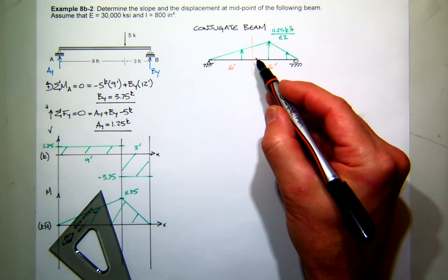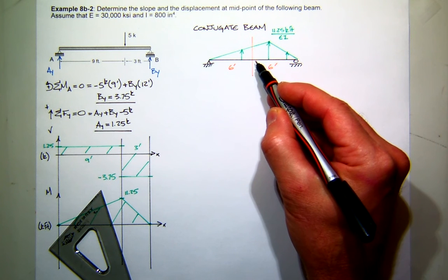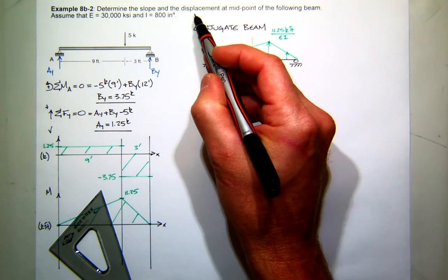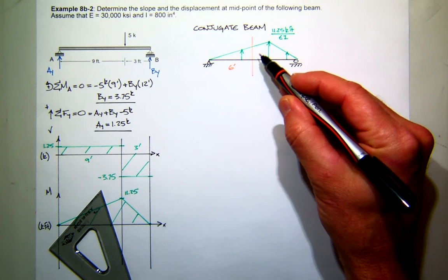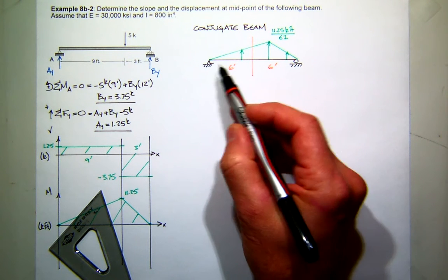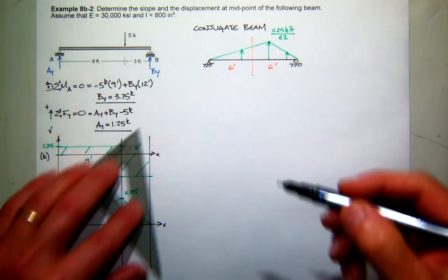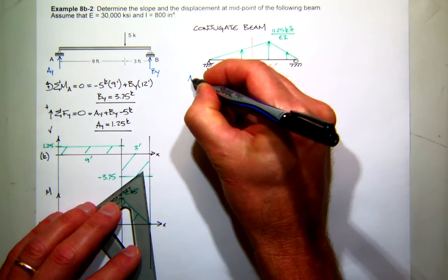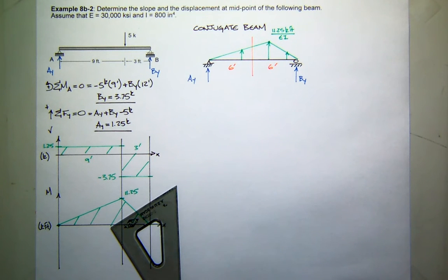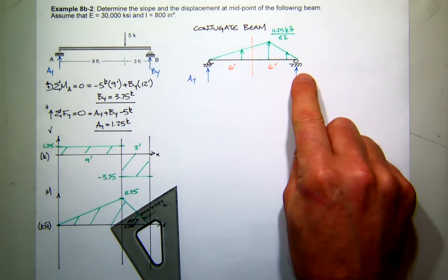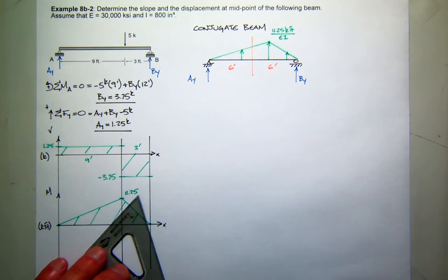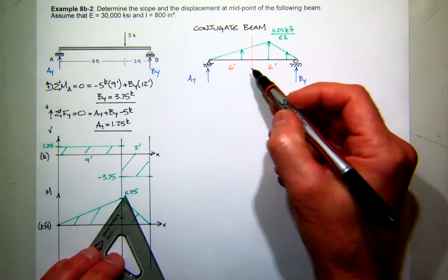Now remember, in the conjugate beam, when I find shear in the conjugate beam, what is that in the real beam? Slope. When I find moment in the conjugate beam, what is that in the real beam? Deflection. So I just need to find the internal shear force and bending moment at this cut. Do you want to work the left side or the right side? The left side has a clear advantage. So in doing that, I need to find the reaction at A.